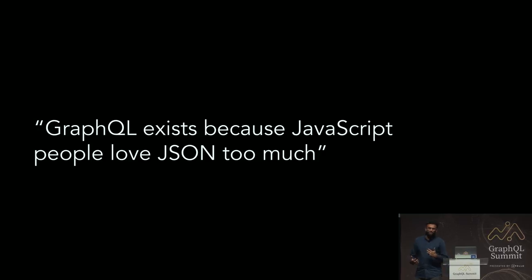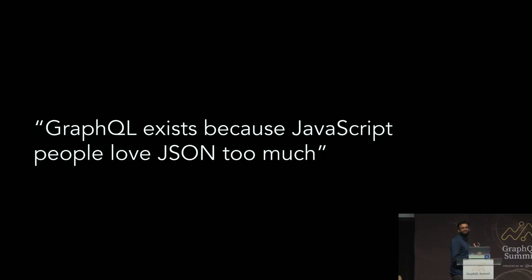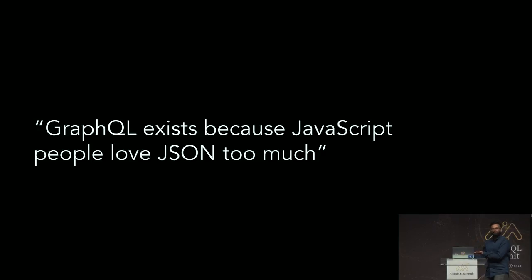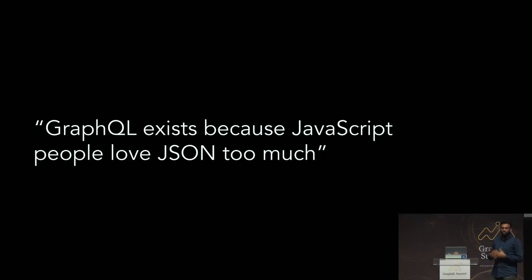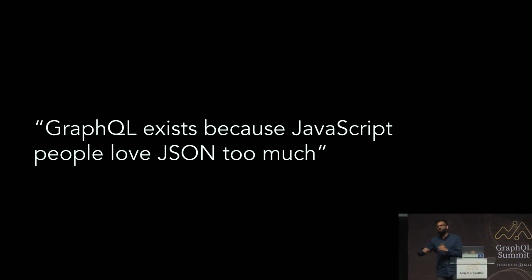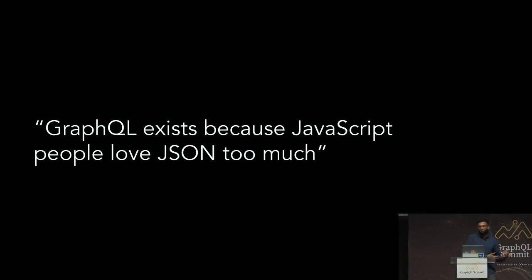If you have been paying attention in the last couple of days, there is a Twitter thread that can be summarized as: GraphQL exists only because JavaScript people are too much in love with JSON. I'm not going to go into that — I'm not a JavaScript person and we are not really a JavaScript shop, but make of it what you will.